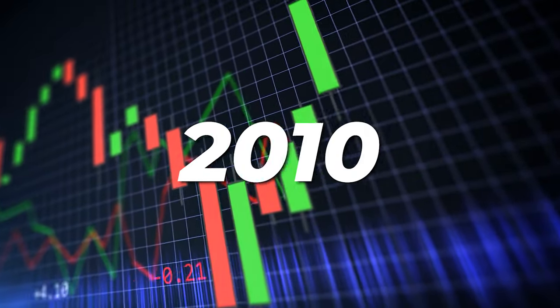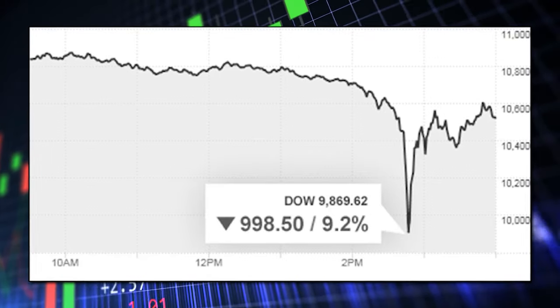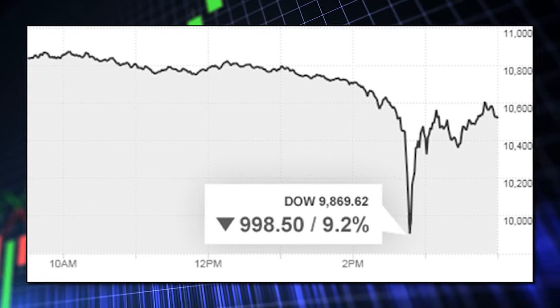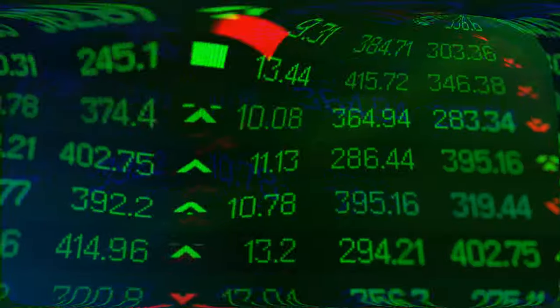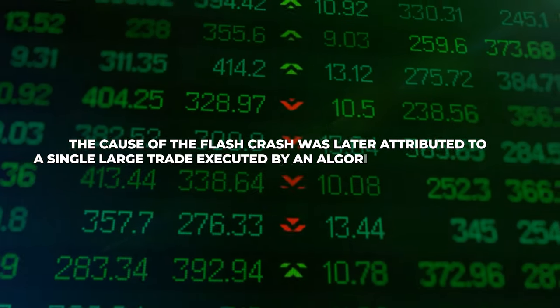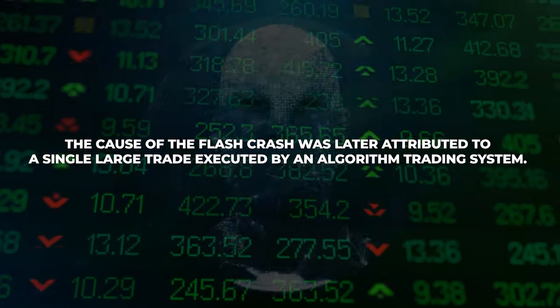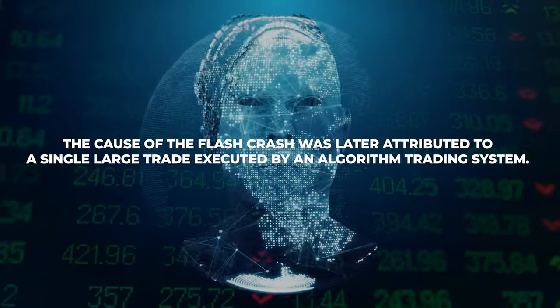In 2010, the flash crash saw the Dow Jones Industrial Average plunge nearly 1,000 points in a matter of minutes, only to recover most of those losses just as quickly. The cause of the flash crash was later attributed to a single large trade executed by an algorithmic trading system.